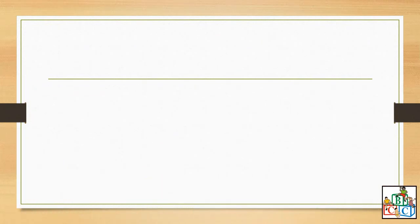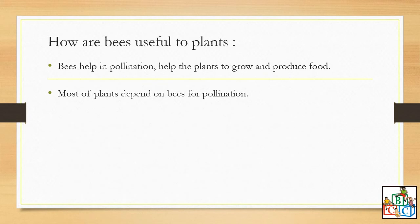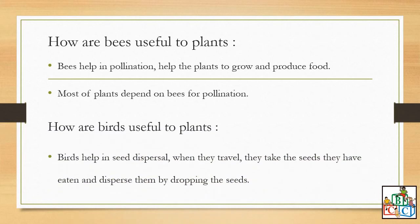I hope you will be able to answer the questions on page 111. Let us move on. How bees are useful to plants? Bees help in pollination. What is the meaning of pollination? In pollination, plants need to reproduce to have other new plants. So bees help in pollination. They help the plants to grow and produce food. Most plants depend on bees for pollination. How are birds useful to plants? So birds, like other animals, they help in seed dispersal. When they travel, they take in the seeds they have eaten and disperse them by dropping the seeds onto the ground.